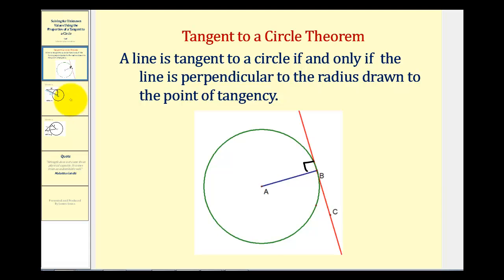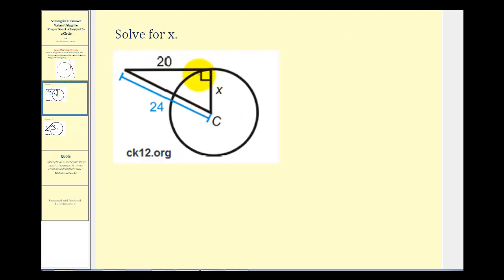Let's go ahead and take a look at our first example. Here we're given a tangent segment and the radius of the circle drawn to that point of tangency which we know forms a right angle. So now that we know we have a right triangle here, we can use the Pythagorean Theorem to determine the value of X.